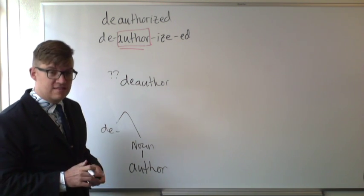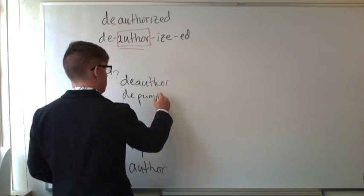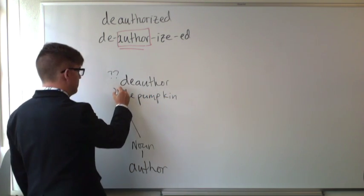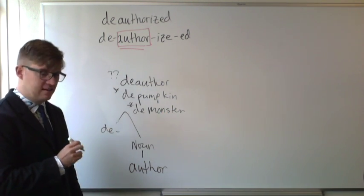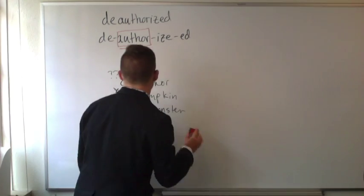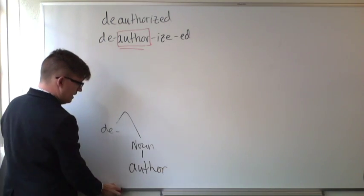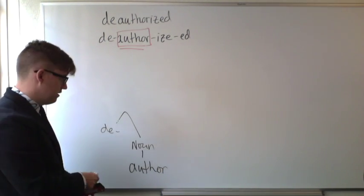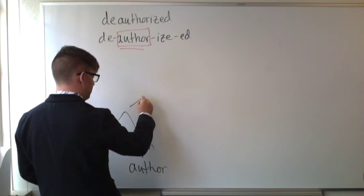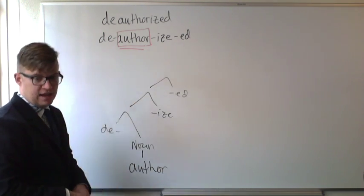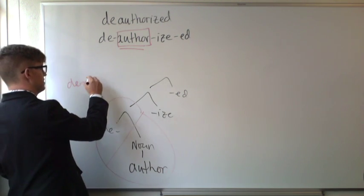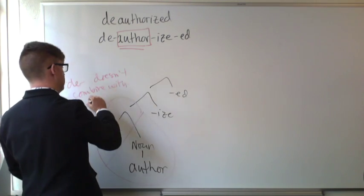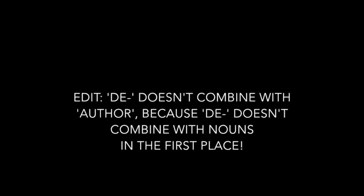You can consider some other possible words that 'de-' might combine with and see how good they sound: 'de-pumpkin' — pretty bad; 'de-monster' — also pretty bad. So from this we can tell that even though we would get the correct order of elements, we know that this step — combining 'de-' directly with 'author' — is a problem, because 'de-' doesn't combine with nouns.